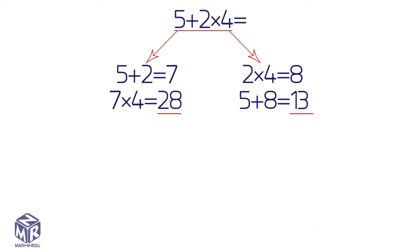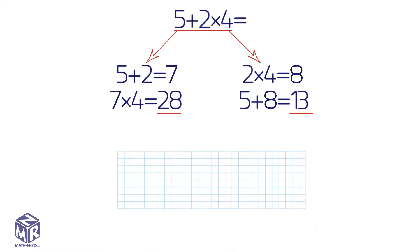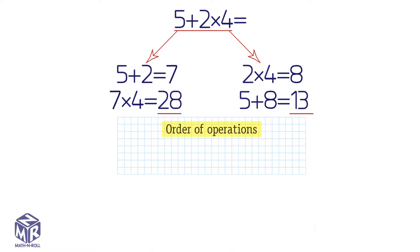When solving problems with more than one type of operation, you need to figure out which operation to do first. A set of rules, known as the order of operations, tells you the order in which calculations are done in a problem.